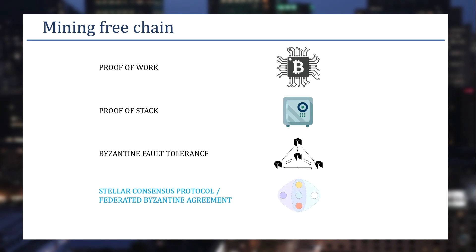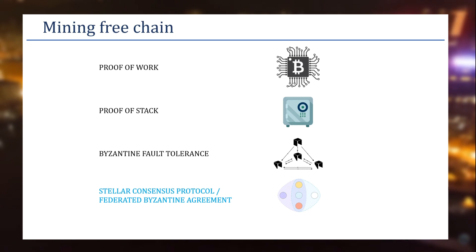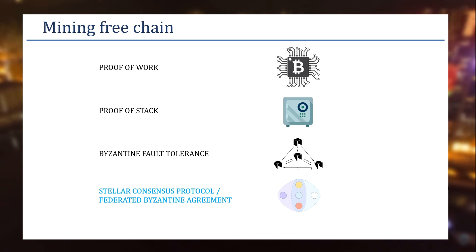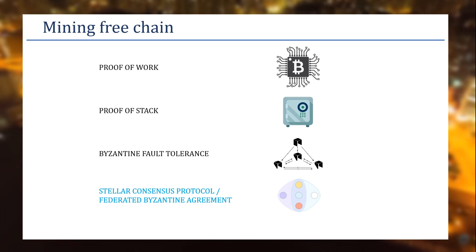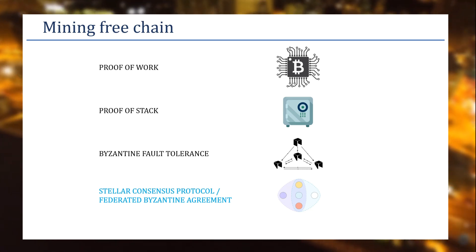Stellar uses its own protocol called the Federated Byzantine Agreement, or FBA. In FBA, there is no central party to appoint who can do the mining process — anyone can participate. All nodes form their quorum slices, where each node is part of a quorum slice as well as other quorums. Each node makes its validations, communicates within its quorum slice, agrees on whether to approve or reject a transaction, and that message is passed to the next quorum. This is how Stellar maintains its consensus mechanism.